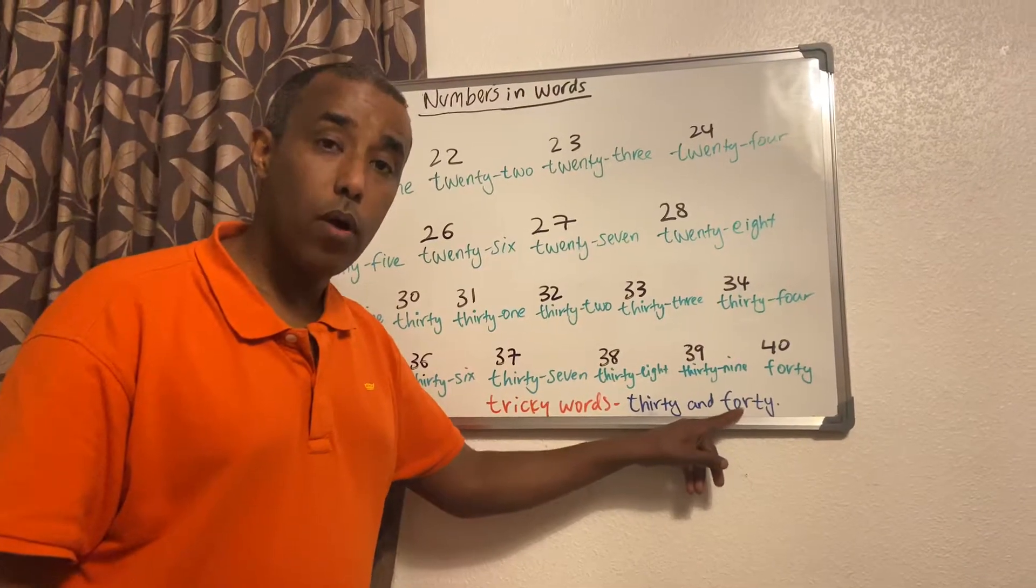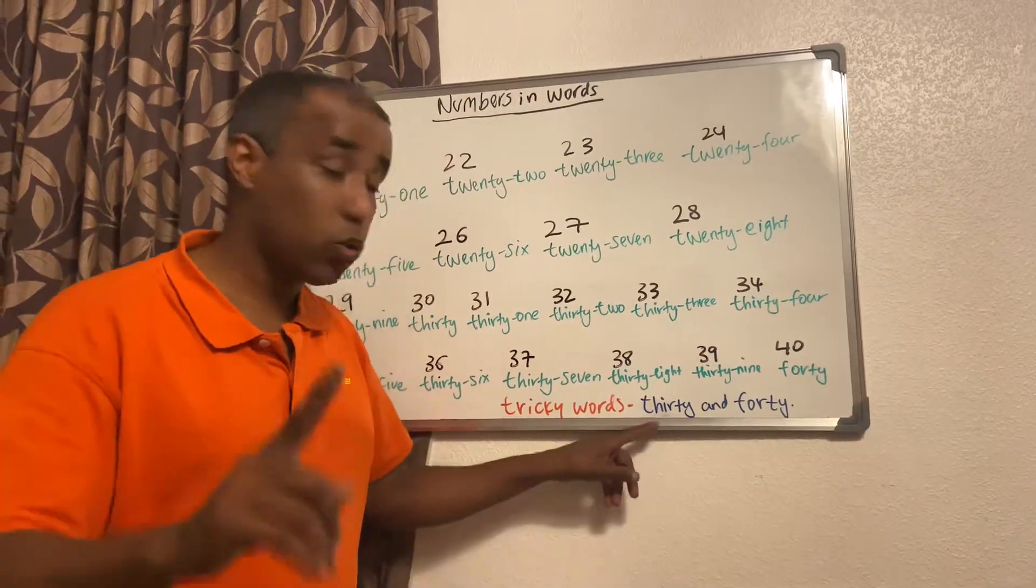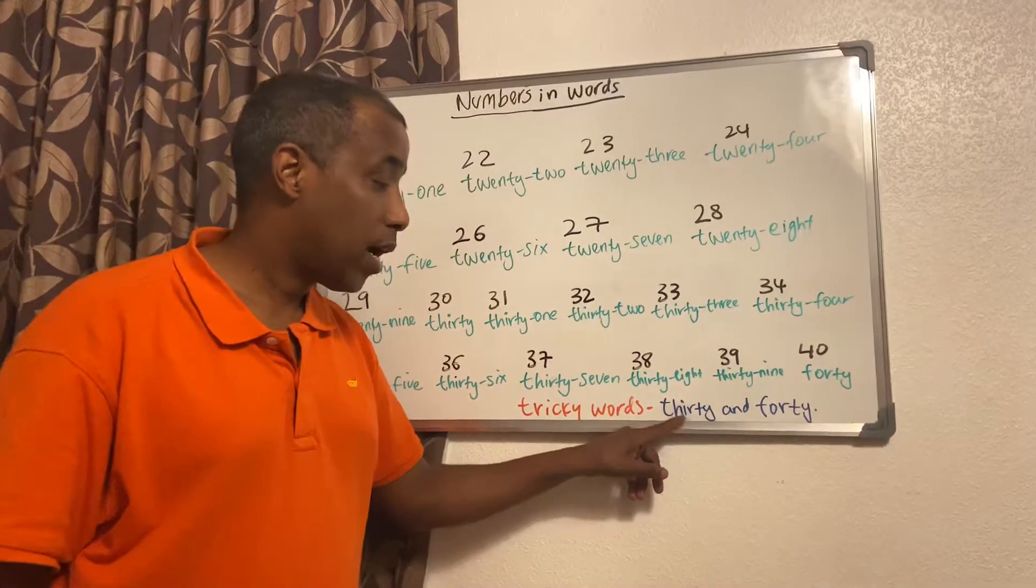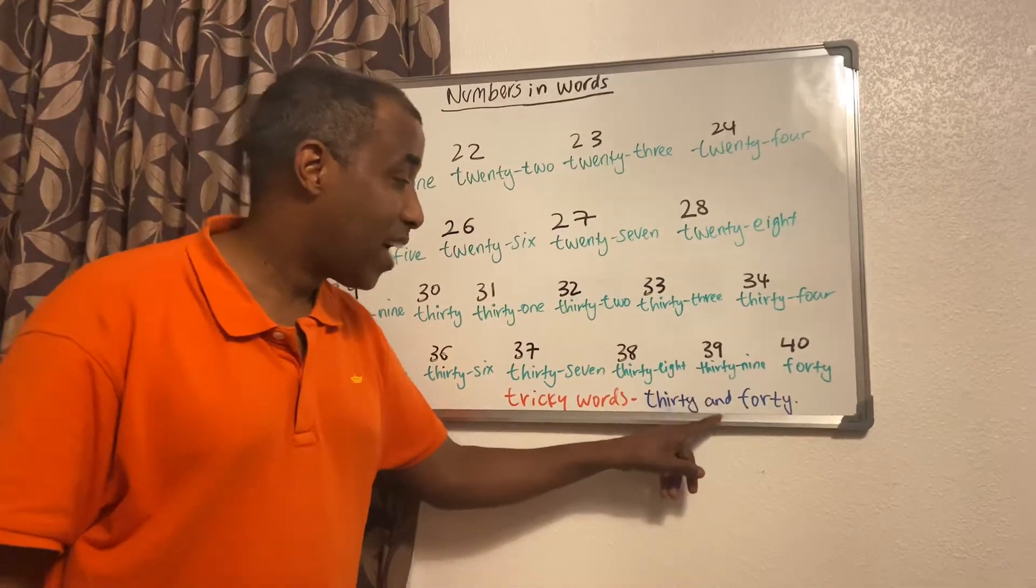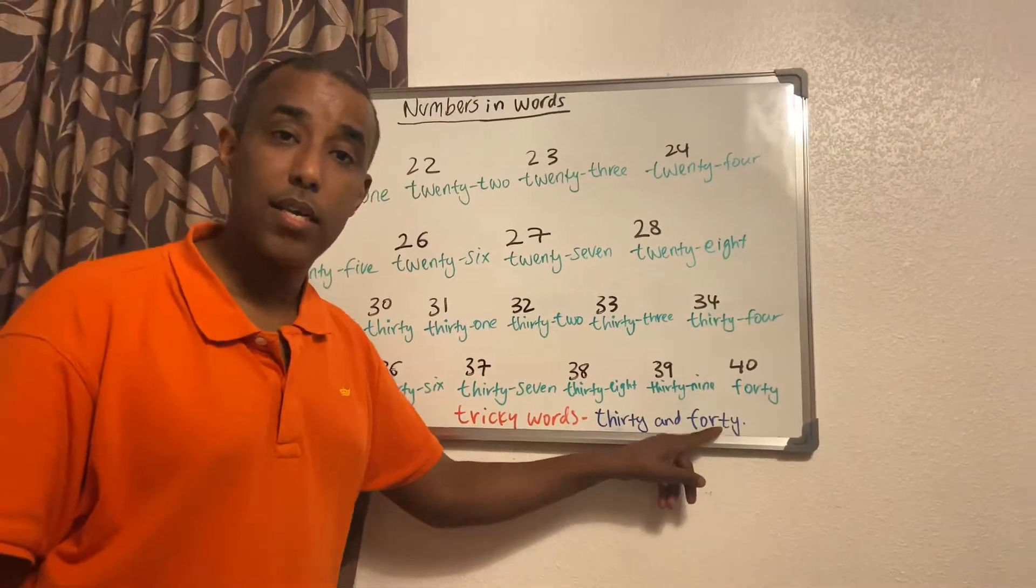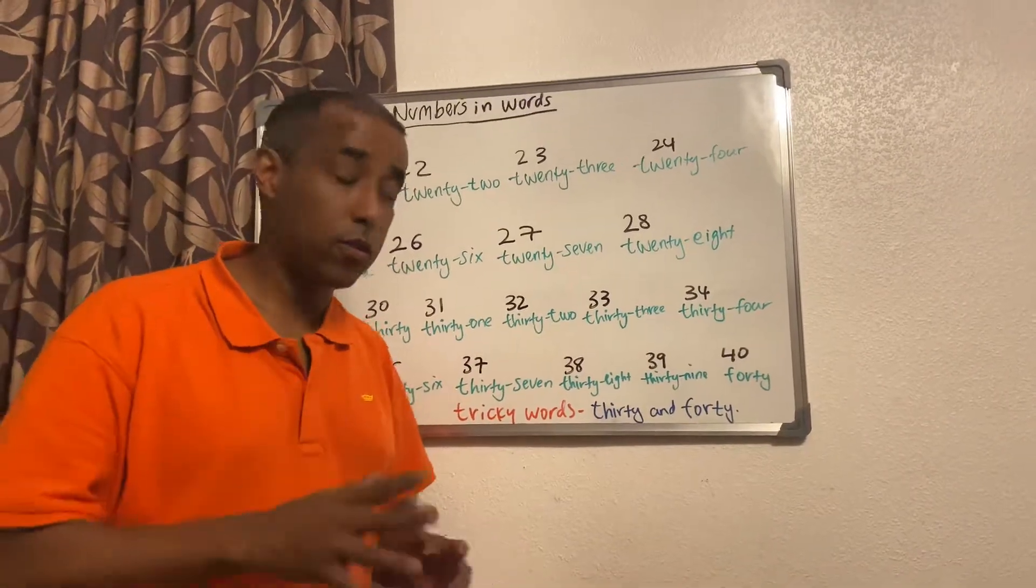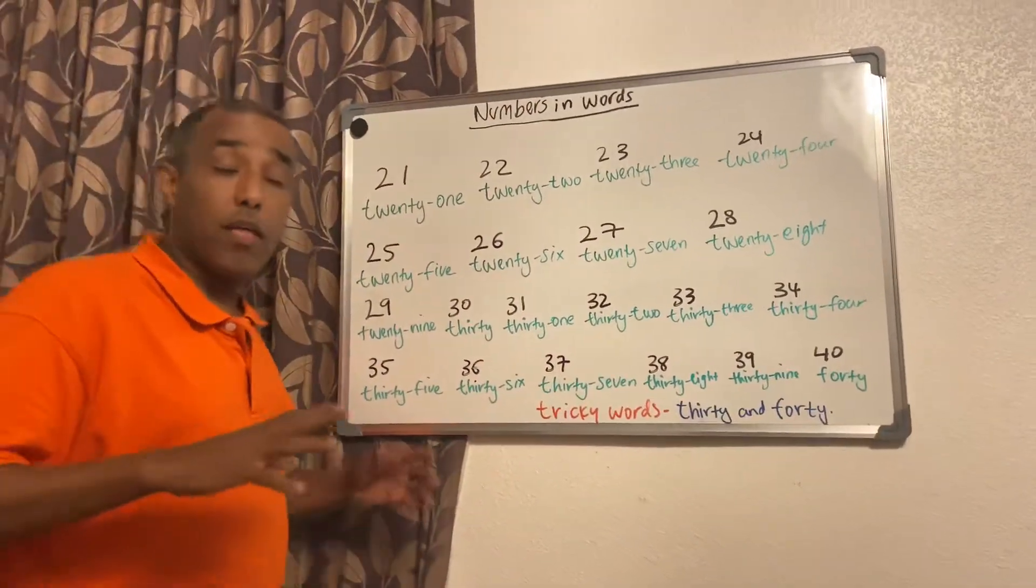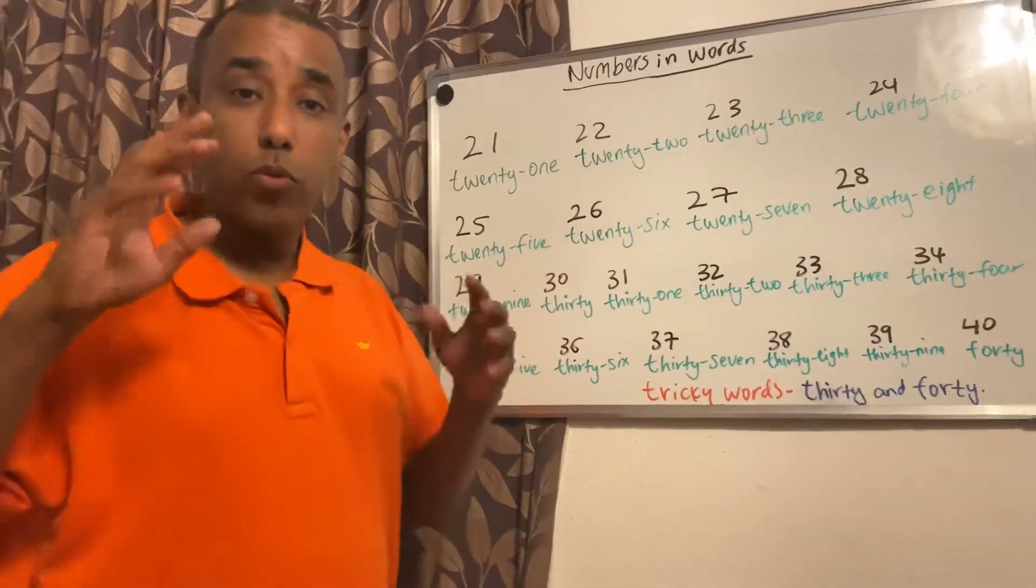Let's spell the tricky words: T-H-I-R-T-Y, and 40 is F-O-R-T-Y. I'll repeat one more time: T-H-I-R-T-Y and F-O-R-T-Y. Thirty and forty.